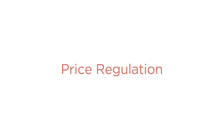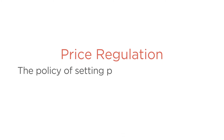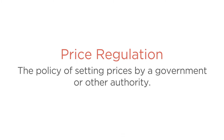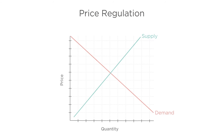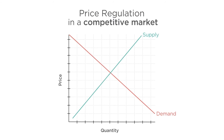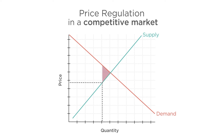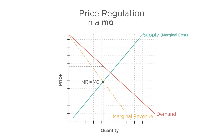So what tools does a government have to make a monopoly market more efficient? One such tool is price regulation — the policy of setting prices by a government or other authority. When we discussed price regulation in a competitive market, we talked about how it leads to lower efficiency, since social welfare is maximized at the competitive market equilibrium, and adding a price regulation simply disrupts that.